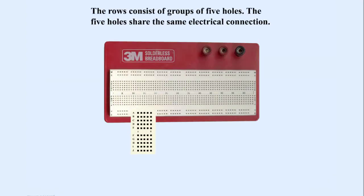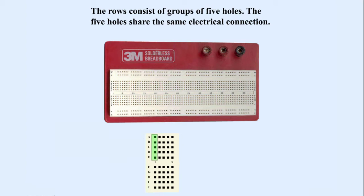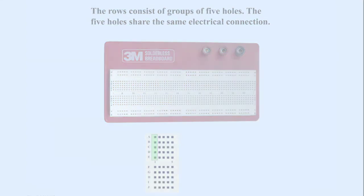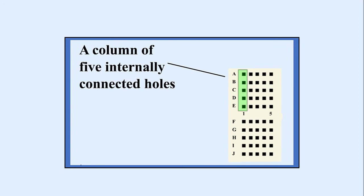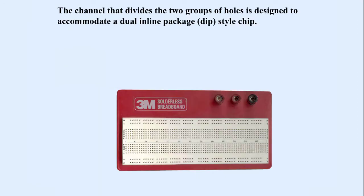The rows consist of groups of five holes. The five holes share the same electrical connection. Shown here is a column of five internally connected holes. The channel that divides the two groups of holes is designed to accommodate a dual inline package style chip.